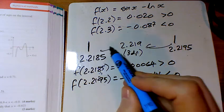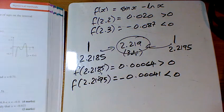Therefore, because it's between those two, it rounds to 2.219.